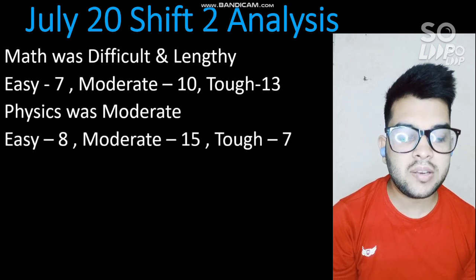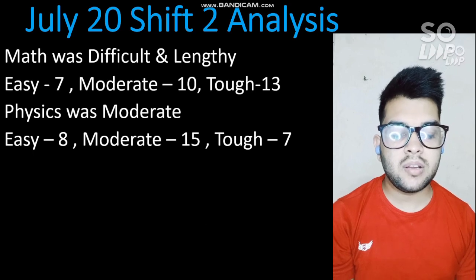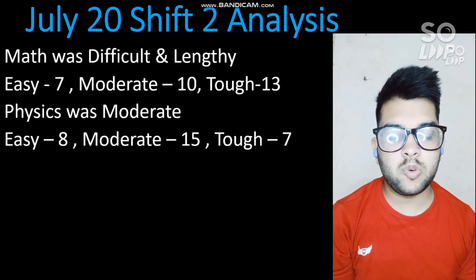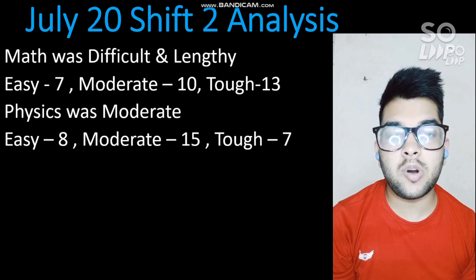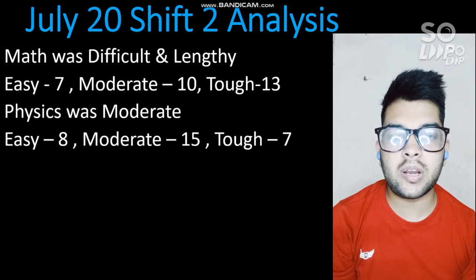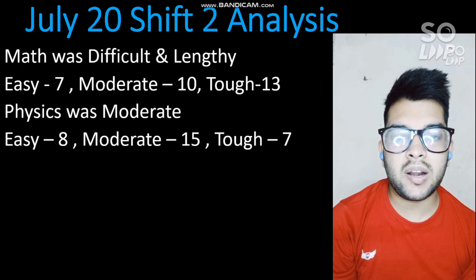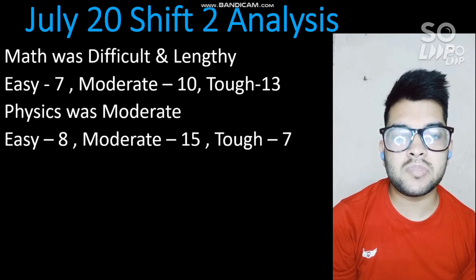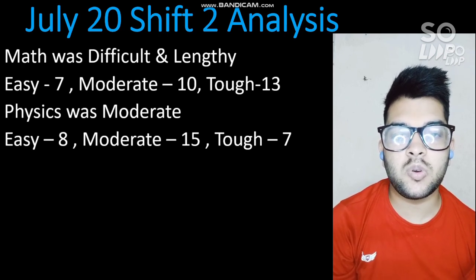Physics was moderate. The number of easy questions was 8, moderate questions were 15, and tough questions were 7. One more important thing to note is that questions were uniformly distributed — meaning each chapter had at least one question. There were hardly one or two chapters in both subjects where no questions were asked.